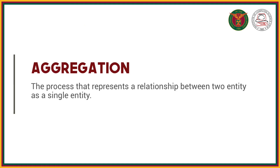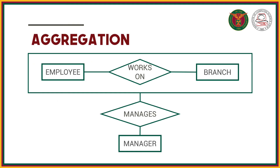Aggregation. This is the process that represents a relationship between two entities as a single entity. In some cases, we want to associate an entity with another relationship. In this example, we have a manager who manages a branch, but a manager also manages an employee who works on a branch. So the concept is that this manager manages this entire relationship, and we can use aggregation to group or treat this relationship as a single entity, making it easier to associate another entity to it.